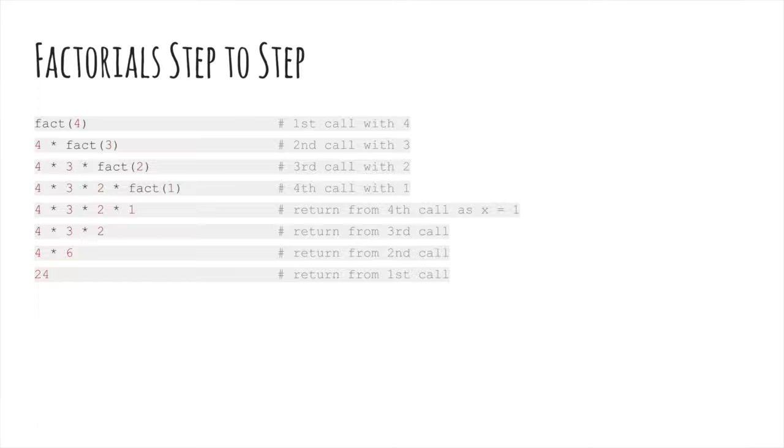After 1 has been returned by our final recursive call, we go back to the point from where the recursive call was made, where our argument was 2. The product of 2 and 1 is calculated and then 2 is returned. This process continues till we reach our original function call where the argument was 4.